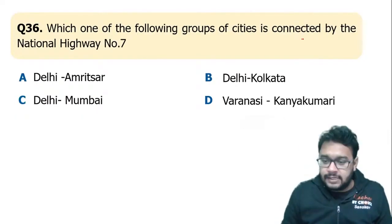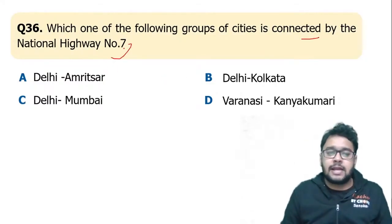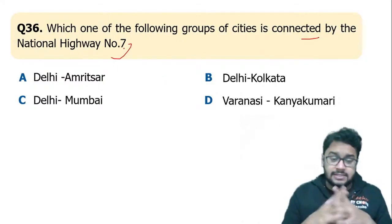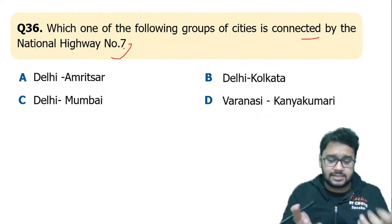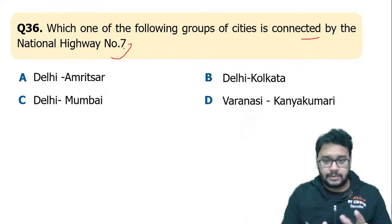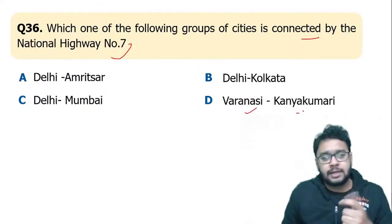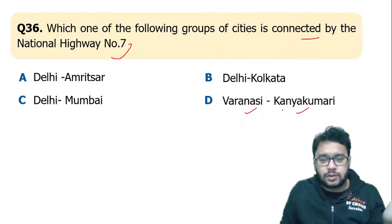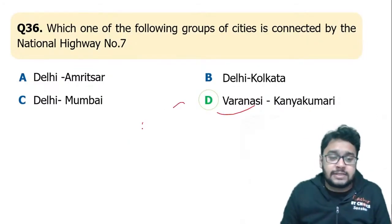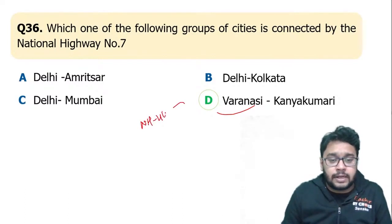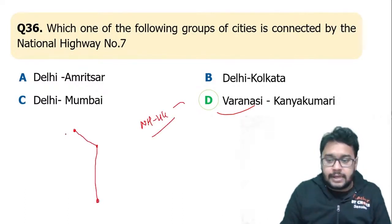Which group of cities is connected by National Highway Number 7? NH7 connects Varanasi and Kanyakumari. Previously it was known as NH44, which connected Srinagar to Kanyakumari — it is also the longest national highway in India.